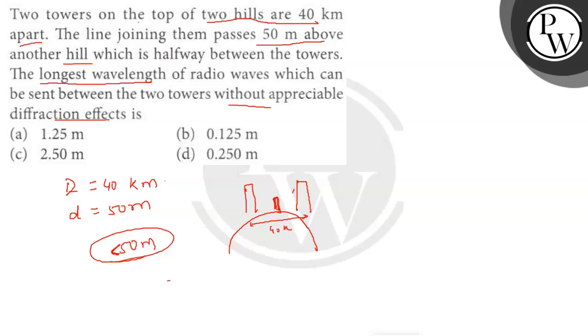So ZP, let's say, is equal to 20 km, and the aperture will be equal to A. The aperture is equal to A, and this will be equal to d, that is 50 m.